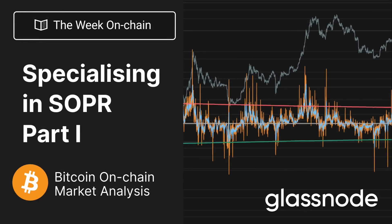Hello everyone, and welcome to your Glassnode video report for week 20, 2023. We're going to focus on something a little bit different today — a single metric, which is SOPR. This really is one of the more powerful and important metrics in the on-chain space to get your head around. We're going to do this as just part one, because there is a lot to unpack when it comes to SOPR. It is a real all-weather metric.